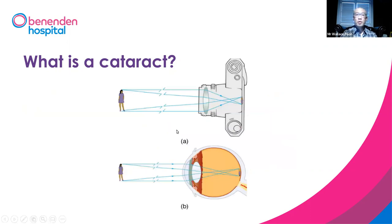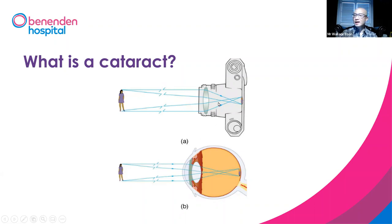The eye works like a camera. The light travels into the eye through the pupil, focused by the lens to the back of the eye — the retina — which is also like the film of the camera. The optic nerve then collects all the information and sends it to the brain. That's what the camera does.